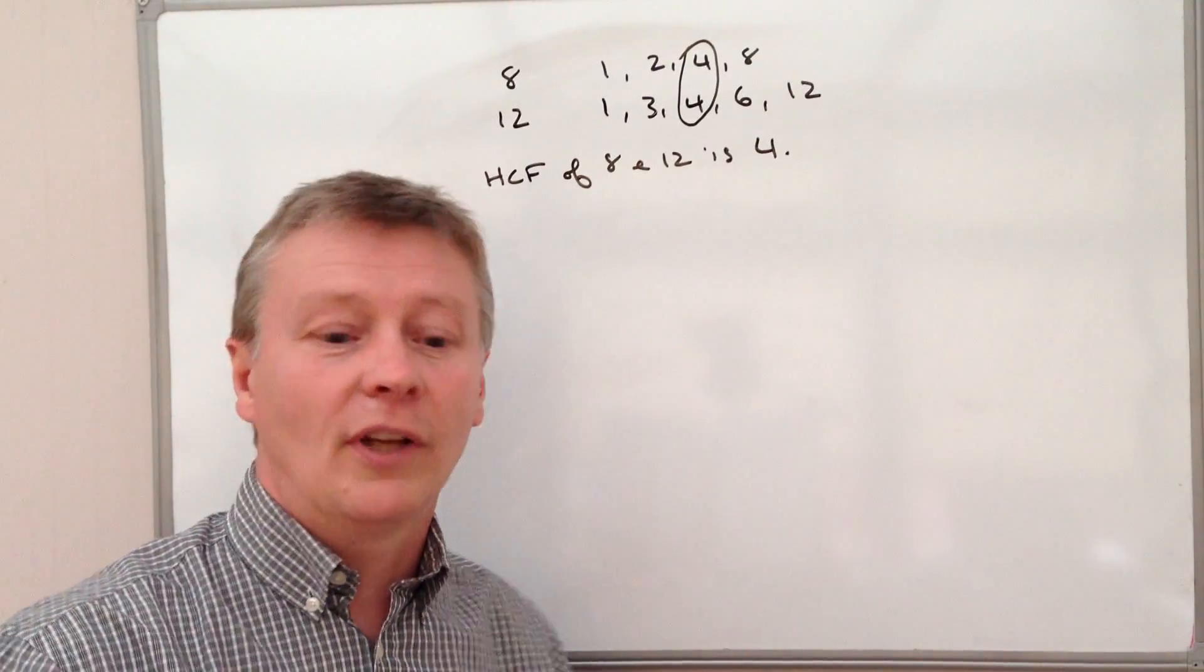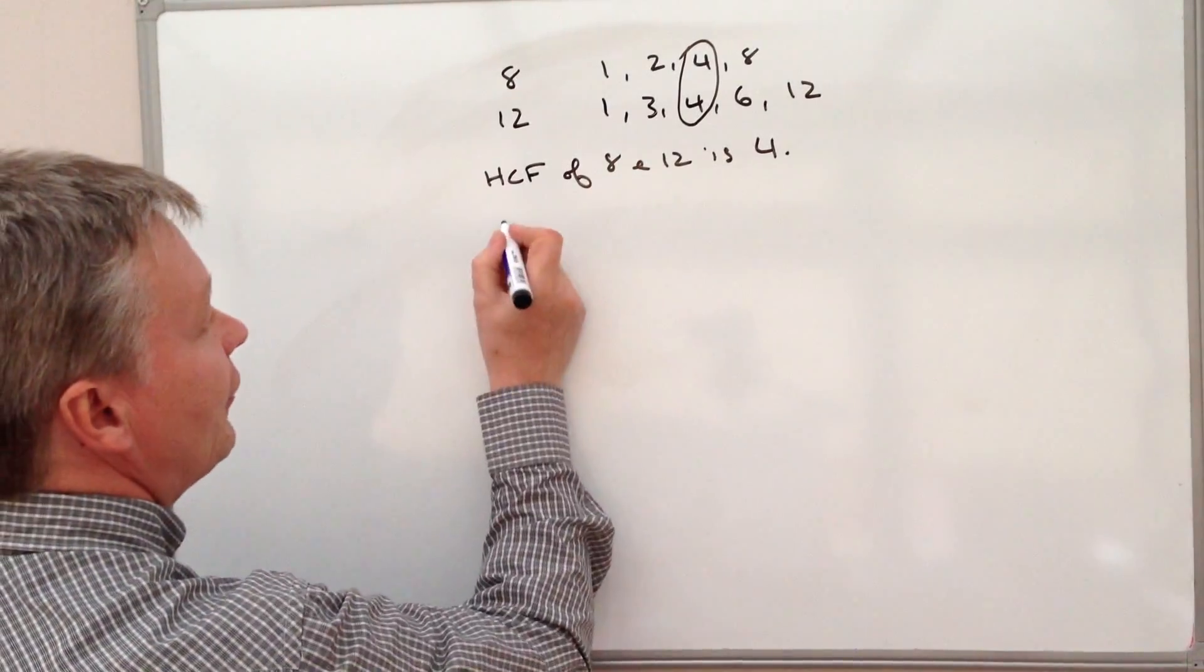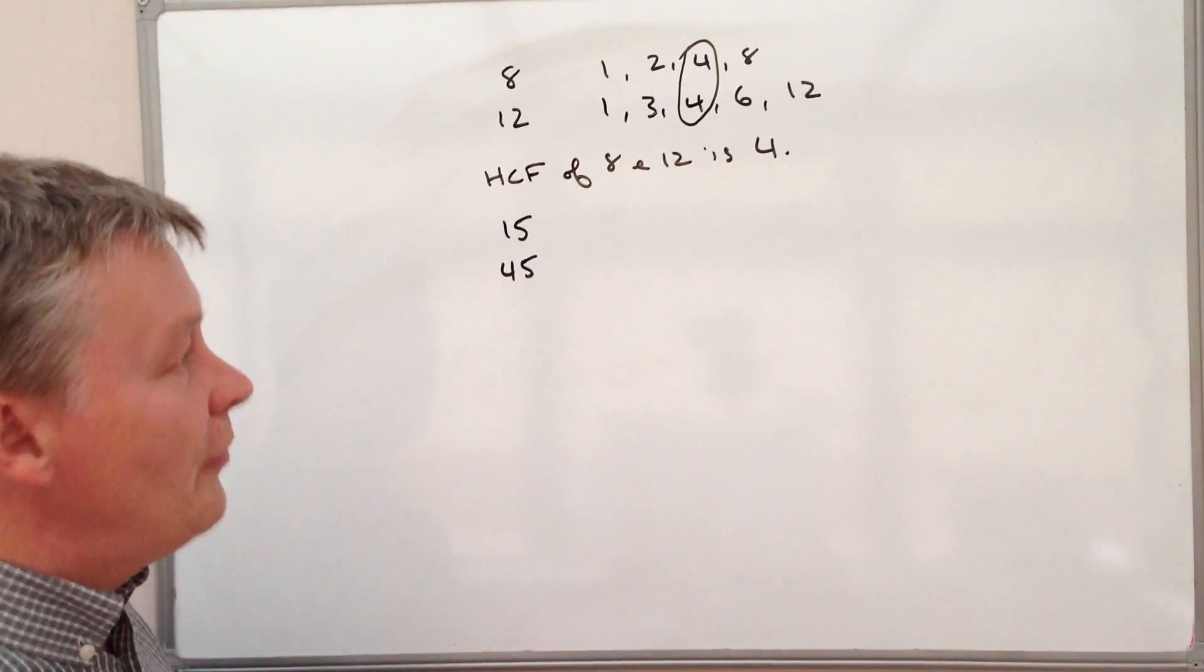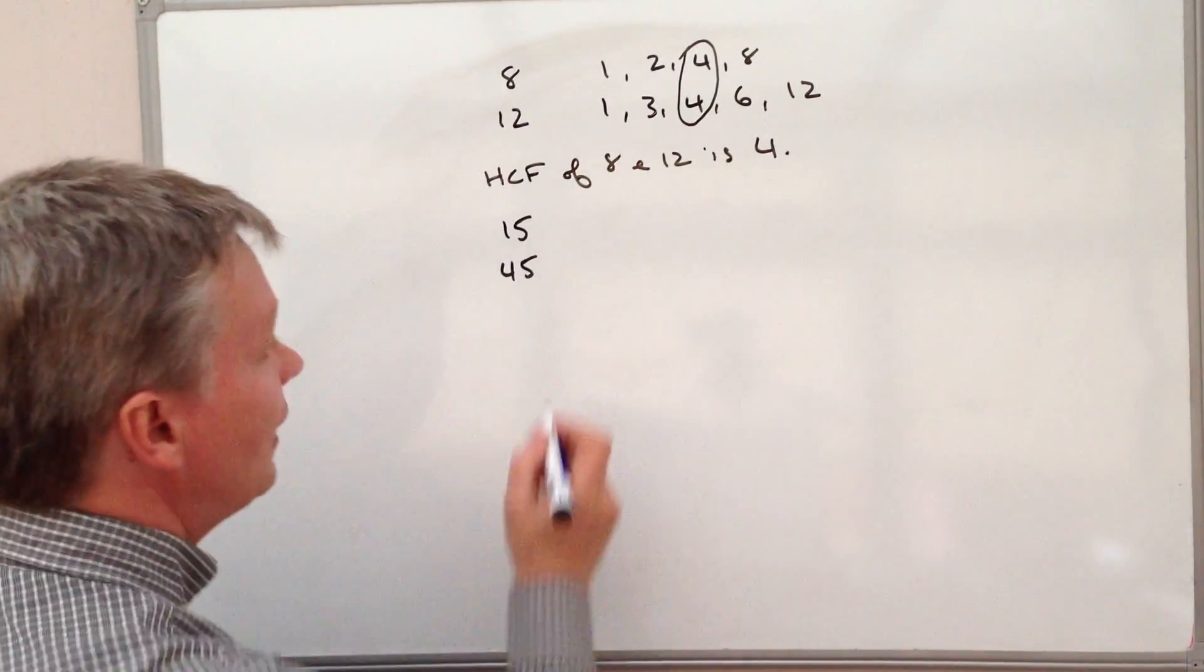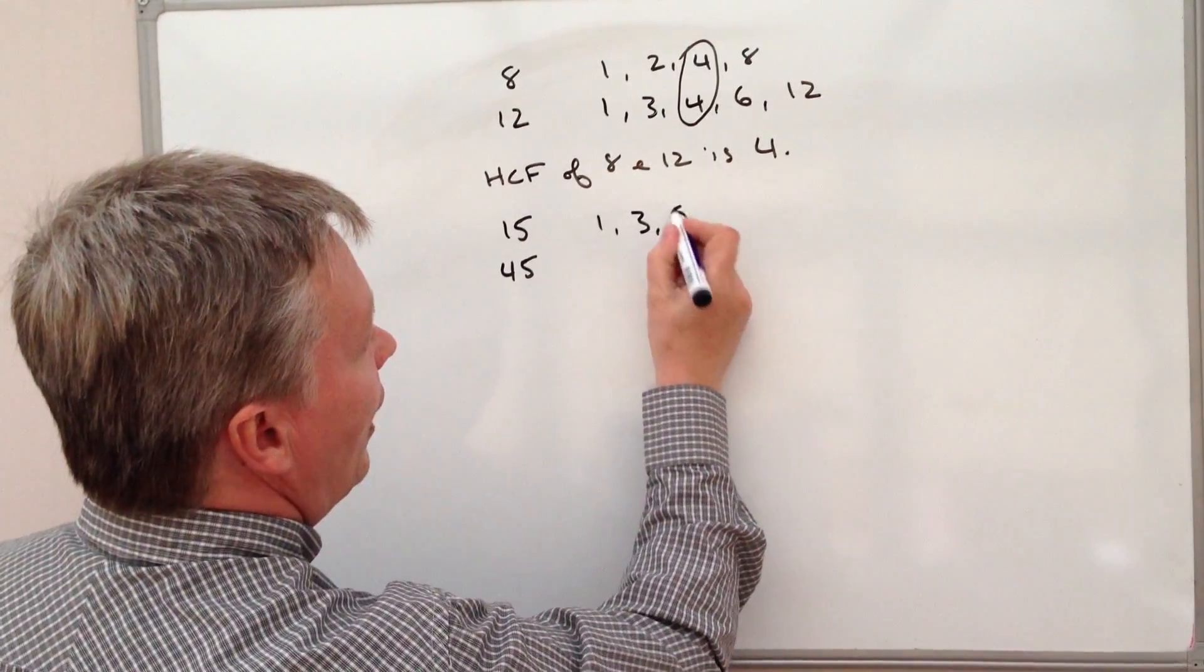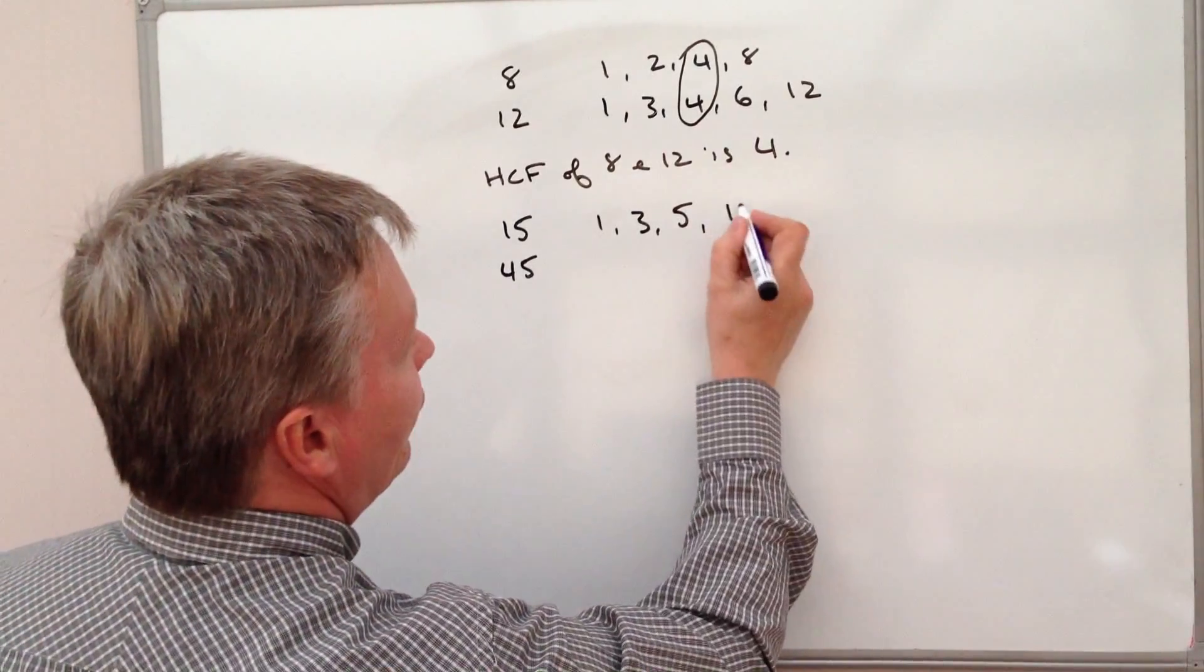We'll just do one more example. And the example we're going to use is 15 and 45. So again, the factors of 15 are 1, 3, 5 and 15.